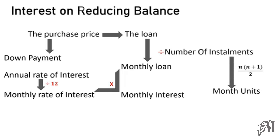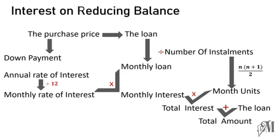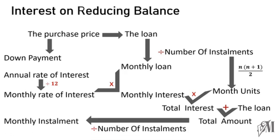With the monthly rate of interest and the monthly loan we can calculate the monthly interest. Then we calculate the month units using the formula n(n+1)/2. Once the monthly interest is multiplied by the number of month units, the total interest is obtained. The loan and total interest together give the total amount to be settled. Dividing the total amount by the number of installments gives the monthly installment. This flow diagram helps clarify the process of calculating interest on reducing balance.